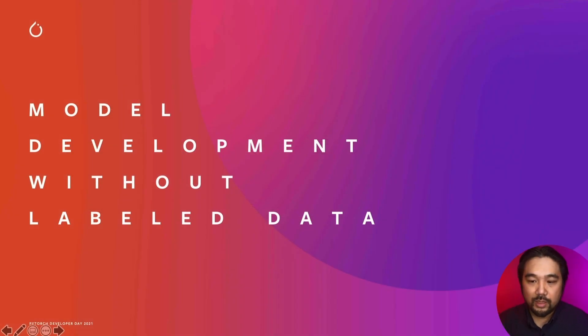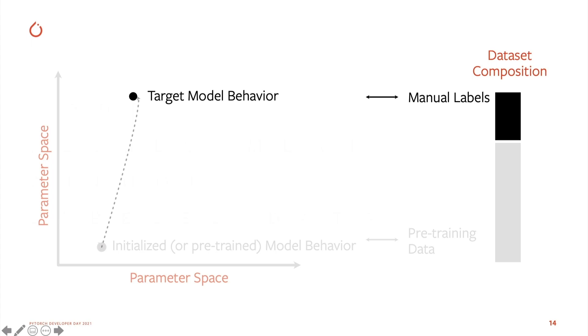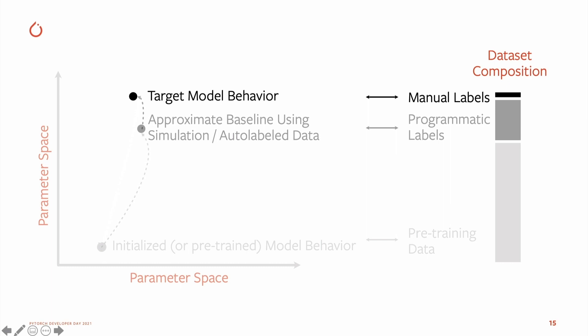Next, how do you go about developing these models? In all these use cases, we often start without any labeled data. This is a view of the traditional supervised learning approach — nowadays you start with a pre-trained model and fine-tune it, but you're still relying on a potentially large number of labels. We often find what succeeds is to get as far as possible using programmatically generated labels — using simulated data or some auto-labeling strategy — so that manual labeling is just the last 5–10% to go from the baseline approximation to the specific intent you're trying to achieve.